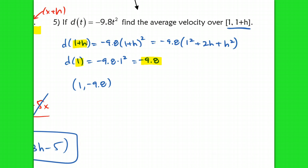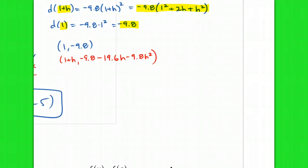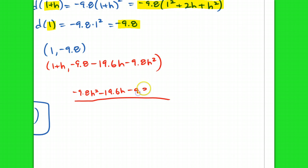My input for the second point is 1+h. Expanding d(1+h): −9.8 times (1 + 2h + h²), which gives −9.8 − 19.6h − 9.8h². So my other coordinate is (1+h, −9.8h² − 19.6h − 9.8). Now finding the average velocity — which is just slope — I take the difference of my y values: (−9.8h² − 19.6h − 9.8) minus (−9.8), all over the change in x values.